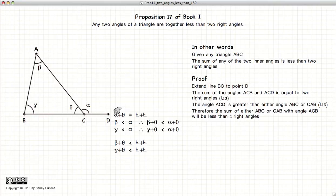And because we already know that theta plus alpha is two right angles, we end up with these two equations. Beta plus theta, gamma plus theta, both of them are less than two right angles.